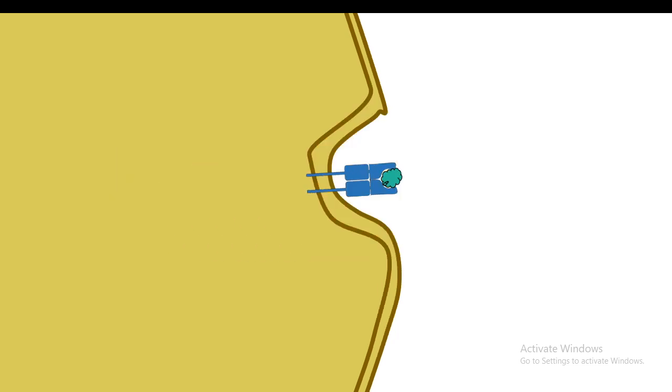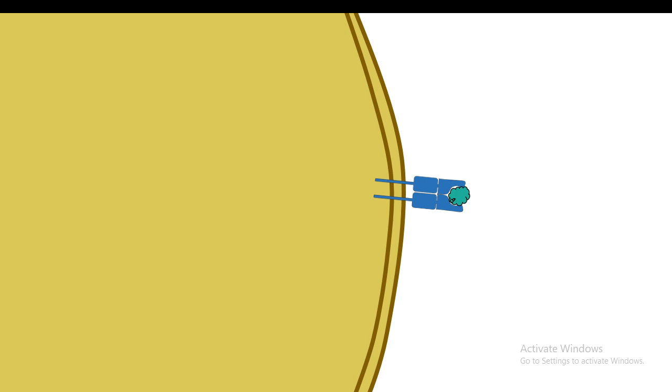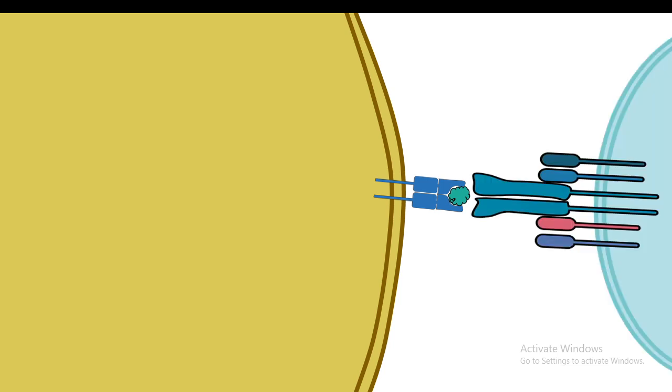These class 2 antigen-bound molecules would be ultimately displayed to the CD4 positive helper T cells. In fact, this antigen presentation gives the CD4 positive helper cell a signal that it needs to recognize it and get activated. This is how MHC-bound peptides help CD4 positive T cells get activated.